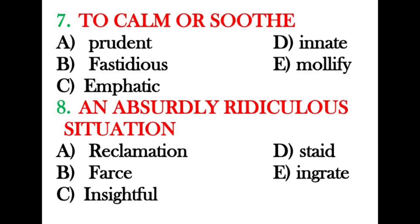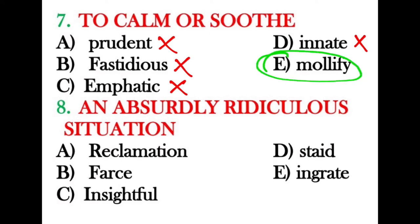Next: what is the exact word for 'to calm or soothe'? Prudent means wise, fastidious means neat and attentive to detail, emphatic means having stress, and innate means by birth. The correct answer is 'mollify' — to calm or soothe, to decrease the intensity of something.